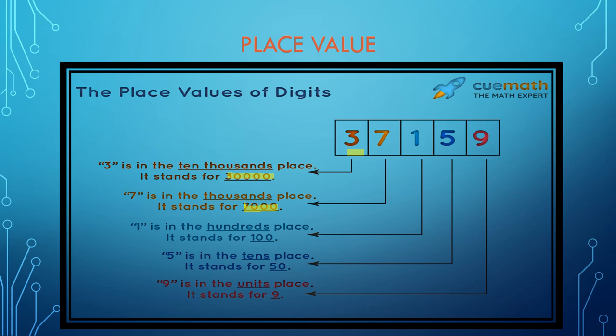One is in the hundred place and it stands for 100. Five is in tens place, so it stands for 50. Nine is in units place, that is ones place, so it stands for 9.